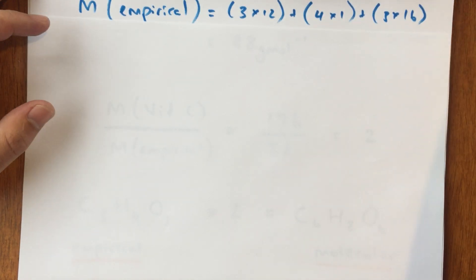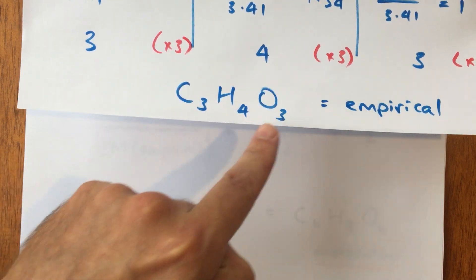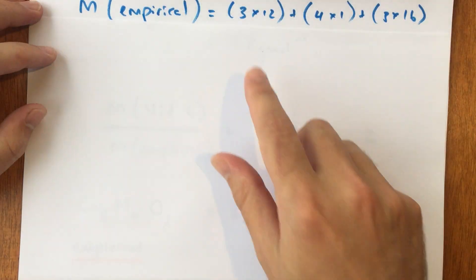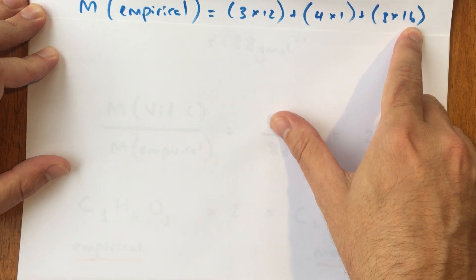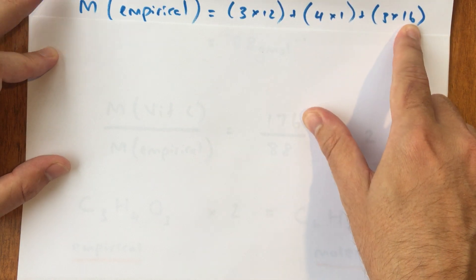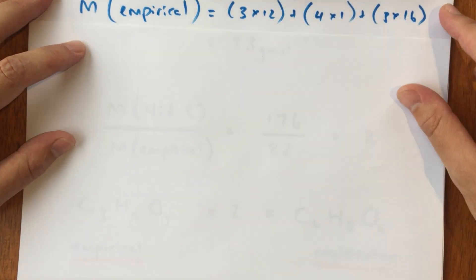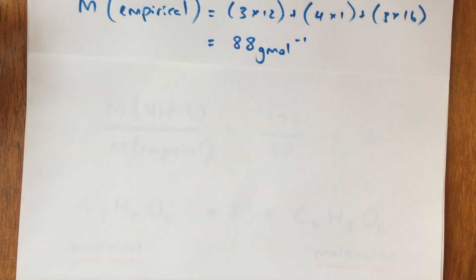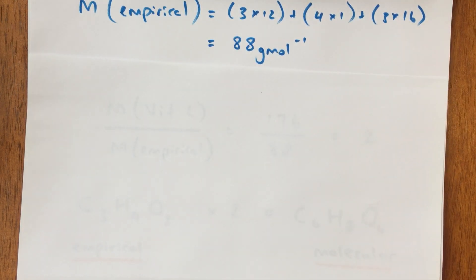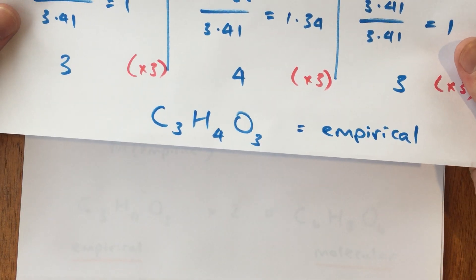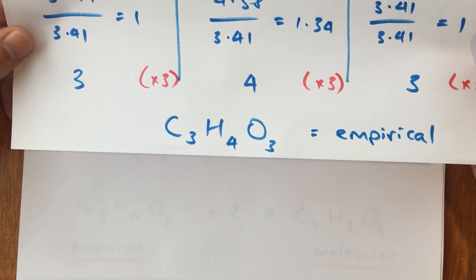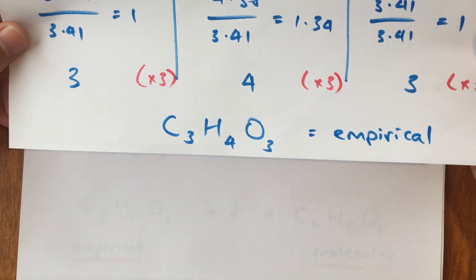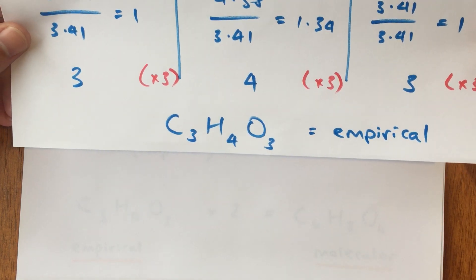First, I need to work out the molar mass of my empirical formula C3H4O3. I have 3 carbons, 4 hydrogens, and 3 oxygens — carbon being 12, hydrogen being 1, oxygen being 16. Adding all those numbers together gives a molar mass of 88 grams per mole for C3H4O3. Now, keep in mind my molecular formula is going to be a multiple of my empirical formula — could it be 3 carbons, 4 H's and 3 O's, or 6 carbons, 8 hydrogens and 6 oxygens? It has to be some whole number multiple of my empirical formula.